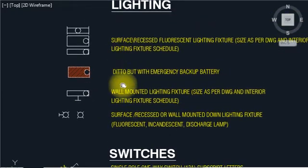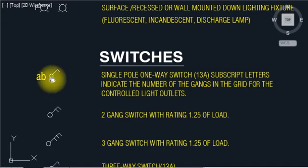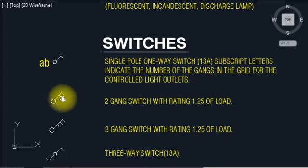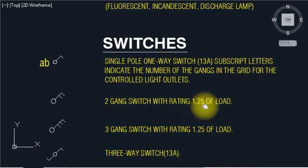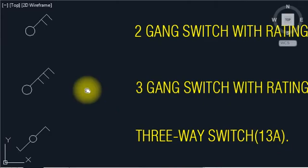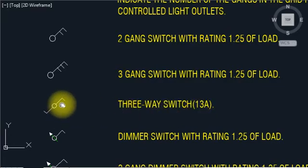For lighting, 1, 2, 3, 4 — now we come to the switches, this is very important for integrating areas. You have to know switches: AB switch like that, the same as single pole one-way switch, 13A. The letter indicates the number of gangs in the grid of the control outlet, control light outlet. We also have a 2-gang switch with rating 1.25 load, a 3-gang switch with rating 1.25 load, and a 3-way switch, 13A.